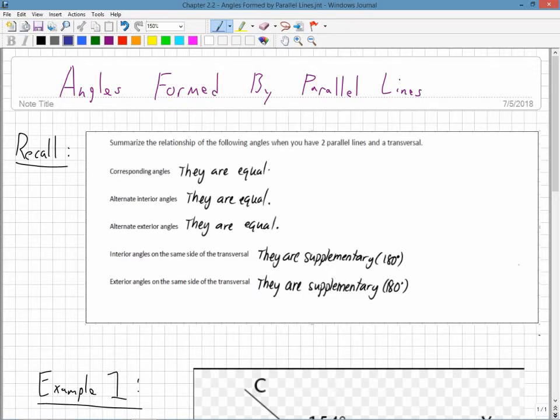Angles formed by parallel lines. Recall, we're going to summarize the relationship between the following angles which we did last video. Corresponding angles are equal. Alternate interior angles, the Z ones, are equal. Alternate exterior angles are equal. Interior angles on the same side of the transversal are supplementary. And exterior angles on the same side of the transversal are also supplementary.